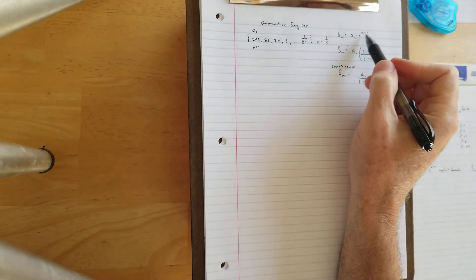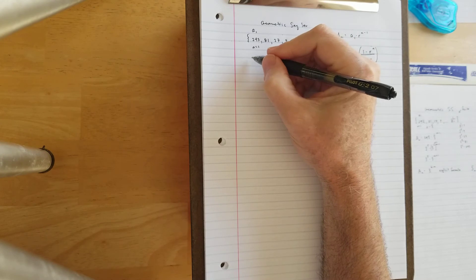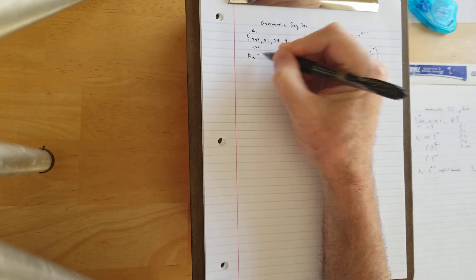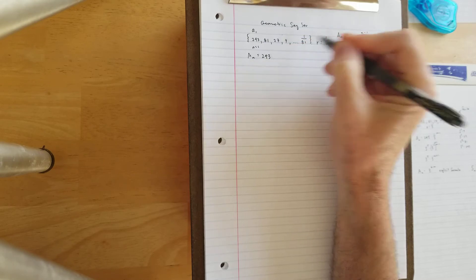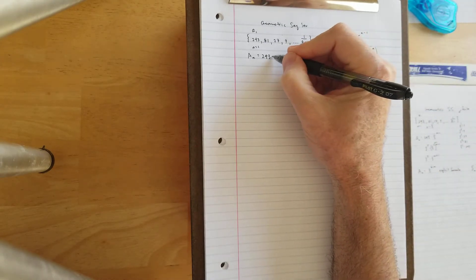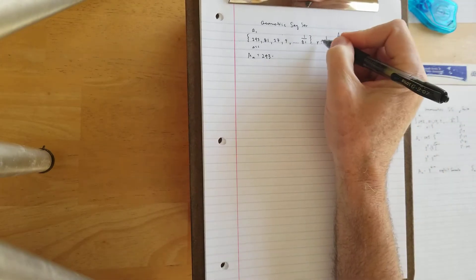Let's go ahead and plug in to our explicit geometric formula the pieces that we know. A sub n equals a sub 1 is 243, that's the first term, and then times R, which is 1 third, to the n minus 1 power to write our formula.